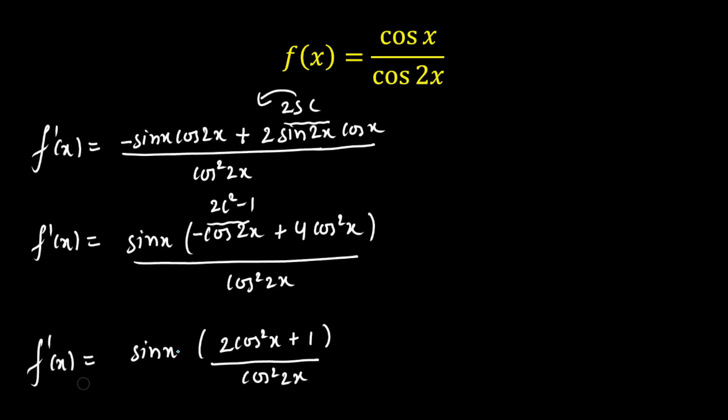Now, if you notice one thing here, this term is a perfect square. As you can see, 2 cos squared x plus 1 will be positive and cos squared 2x will be positive. So this term is purely positive. So f prime of x sign is only decided by sin x here.